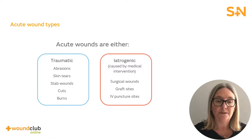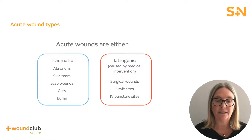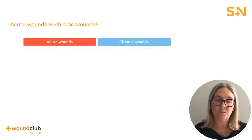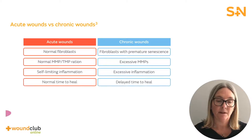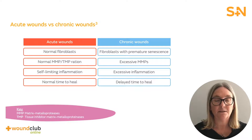Acute wounds begin with an injury that disrupts the blood supply, followed by blood clotting which stimulates the release of growth factors that initiate the wound healing cascade. The behaviour of the cells that play a vital role in wound healing is determined by the current state of the wound. This slide gives an overview of the ratios of the different cells and how they apply to acute and chronic wounds.